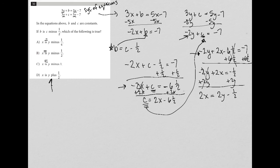And then I'm going to divide everything by 2. So divide by 2, divide by 2, divide by 2. So I'm left with x equals 2y over 2. Well, that's just y. 1 half divided by 2, well that's just 1 fourth. So y minus 1 fourth. So x equals y minus 1 fourth.